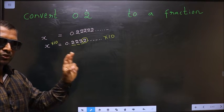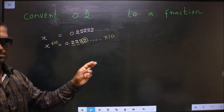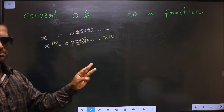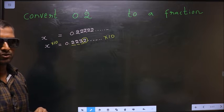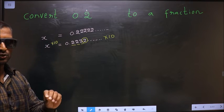Had it been 2 numbers being repeated, multiply by 100. Had it been 3 numbers being repeated, you should multiply by 1000. It is a rule.